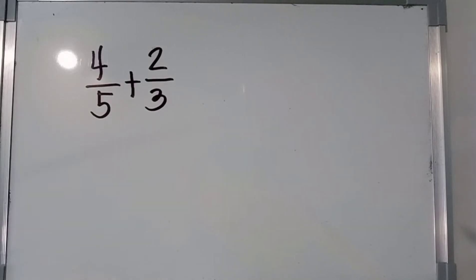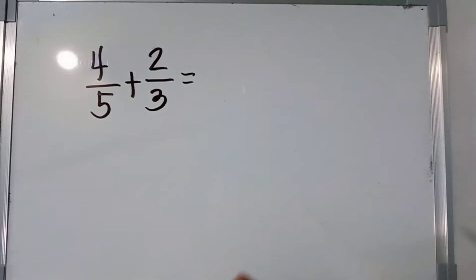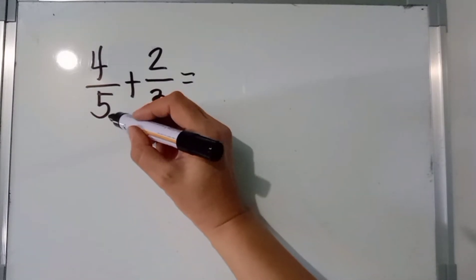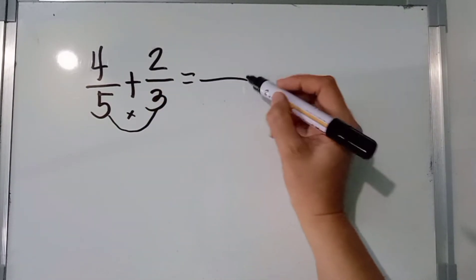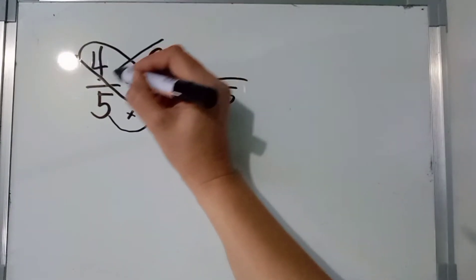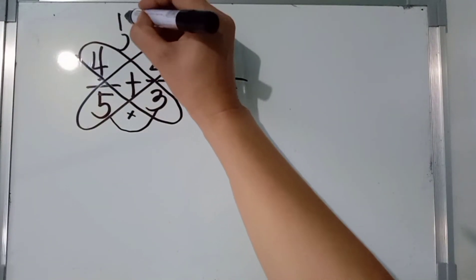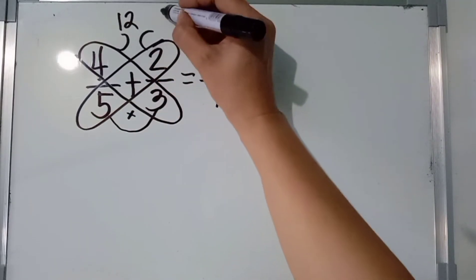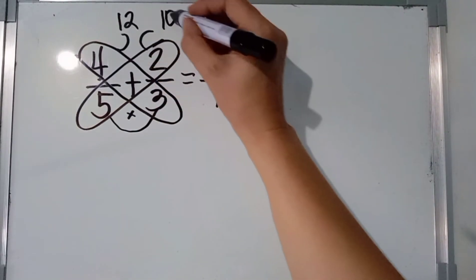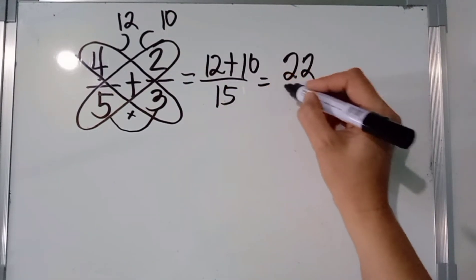Next example: 4 fifths plus 2 thirds, or 4 over 5 plus 2 over 3. Again, using the butterfly method, we are going to multiply the denominators first, which is 5 and 3. So, 5 times 3, the answer is 15. Next, we are going to multiply diagonally. 4 times 3, the answer is 12. 5 times 2, the answer is 10. So 12 plus 10, the answer is 22 over 15.